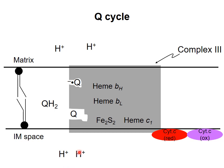Remember that this site at the bottom has a higher affinity for reduced coenzyme Q, so the oxidized Q at this site dissociates from the complex and is replaced by a reduced Q.